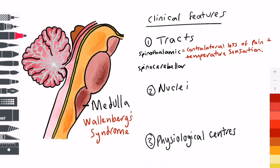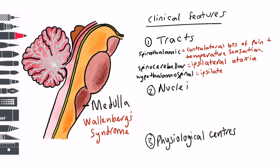Affected tracts within the medulla include the spinothalamic tracts which result in contralateral loss of pain and temperature sensation. Also, the spinocerebellar tracts can be affected causing an ipsilateral ataxia. Finally, the hypothalamospinal tract can also be affected causing an ipsilateral Horner's syndrome.